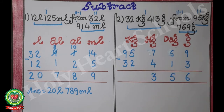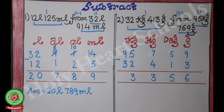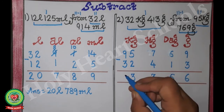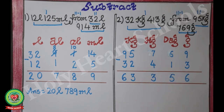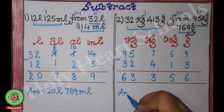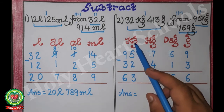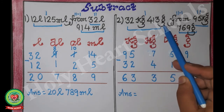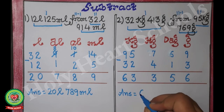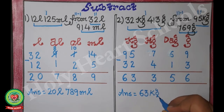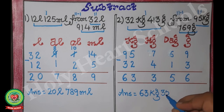5 minus 2 is 3, so we write 3. 9 minus 3 is 6, so we write 6. We have done the subtraction. The answer is 63 kilograms and 356 grams, because the statement was given in kilograms and grams, so the answer is also in kilograms and grams.